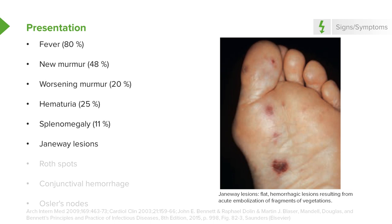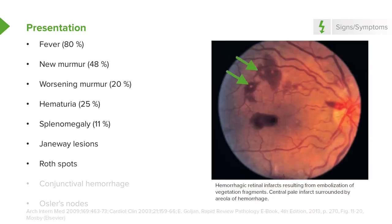More virulent organisms produce Janeway lesions — flat hemorrhagic lesions that result from acute embolization of fragments from vegetations containing living organisms, so these patients are often quite ill. In the old classification, these were the acute endocarditis types. Also in sicker patients, you may find Roth spots — as you look through the ophthalmoscope, you see retinal hemorrhages with a white center, a white infarct of the retina surrounded by an areola of hemorrhage.